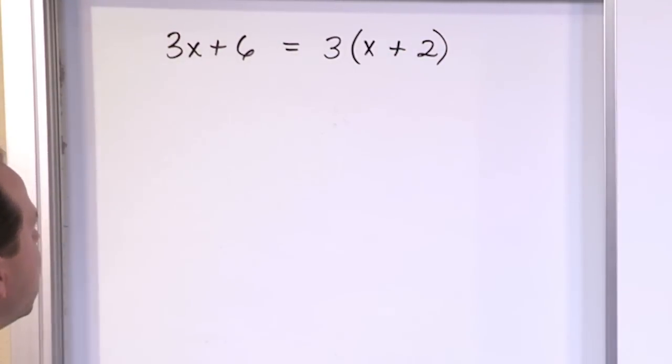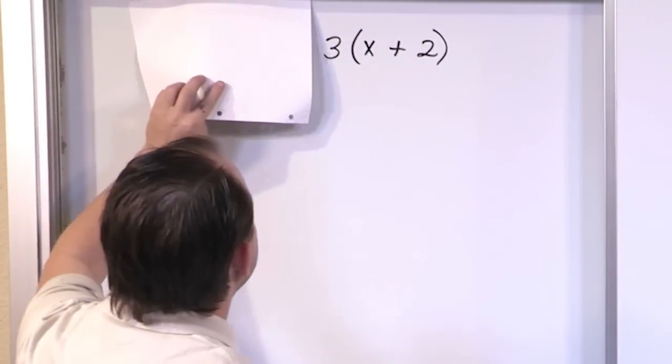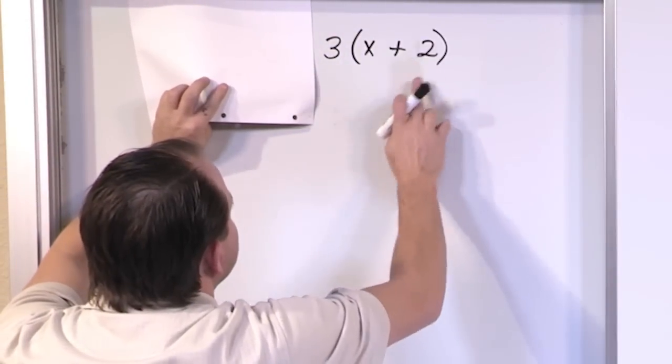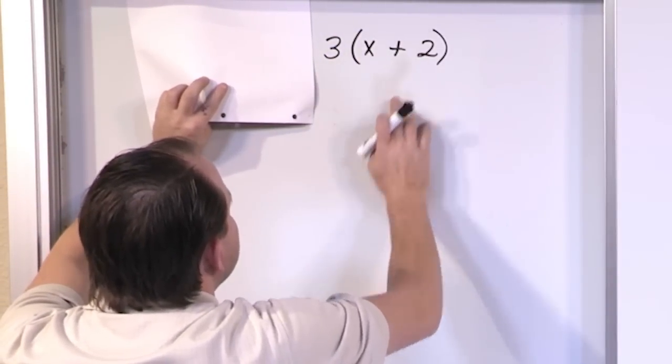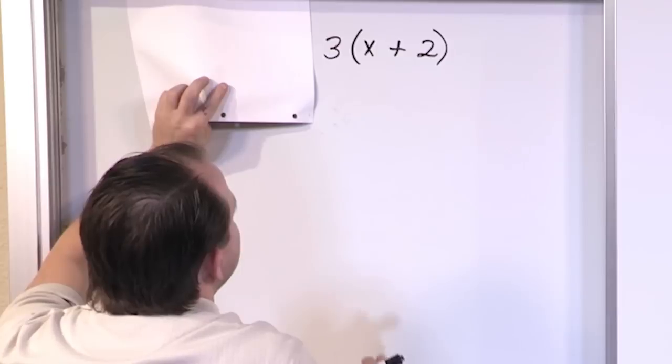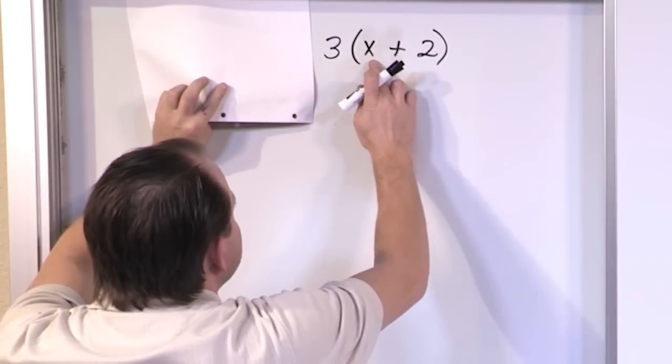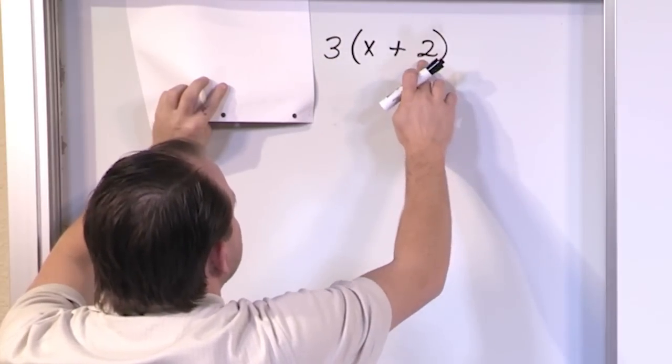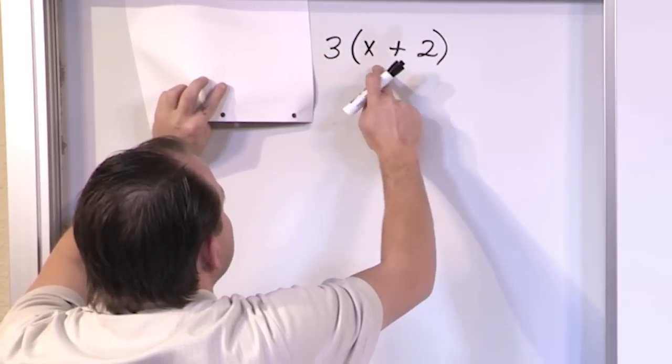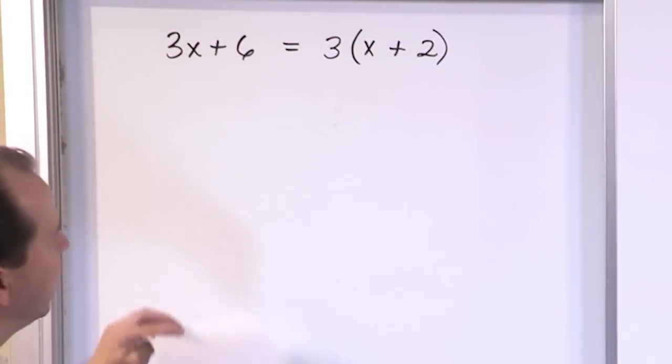Now let me show you why that's true. Because if you cover this up, and I tell you, hey, here's 3 times x plus 2, distribute this in. We've learned about distribution so much, you should know that it's going to be 3 times x plus this, which is going to be 6. 3 times 2 is 6. So 3x plus 6. That's exactly what we have, 3x plus 6.